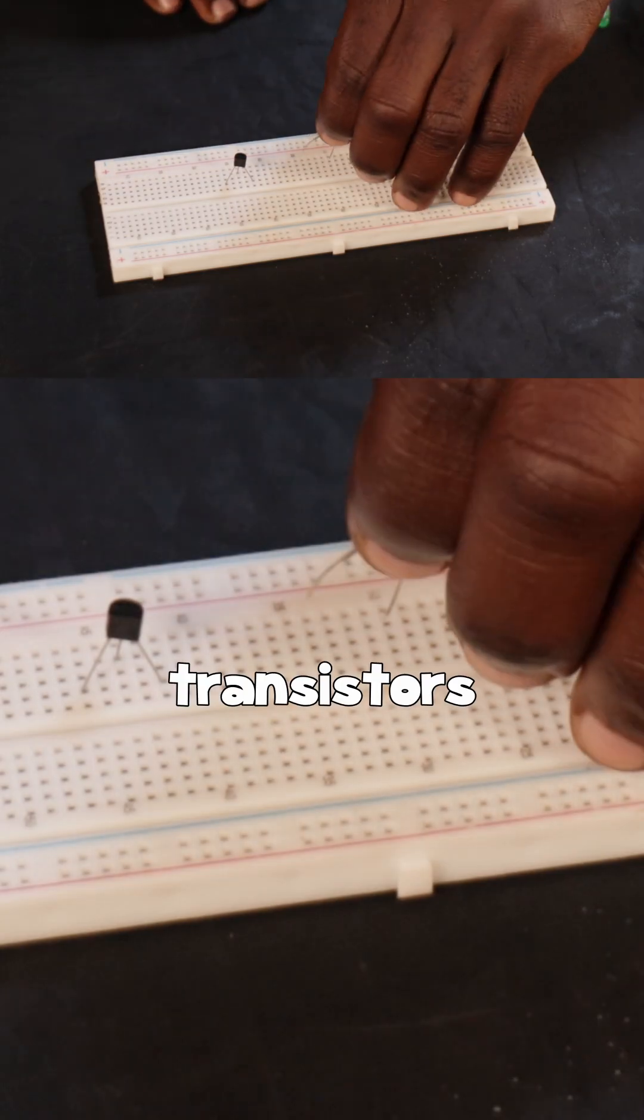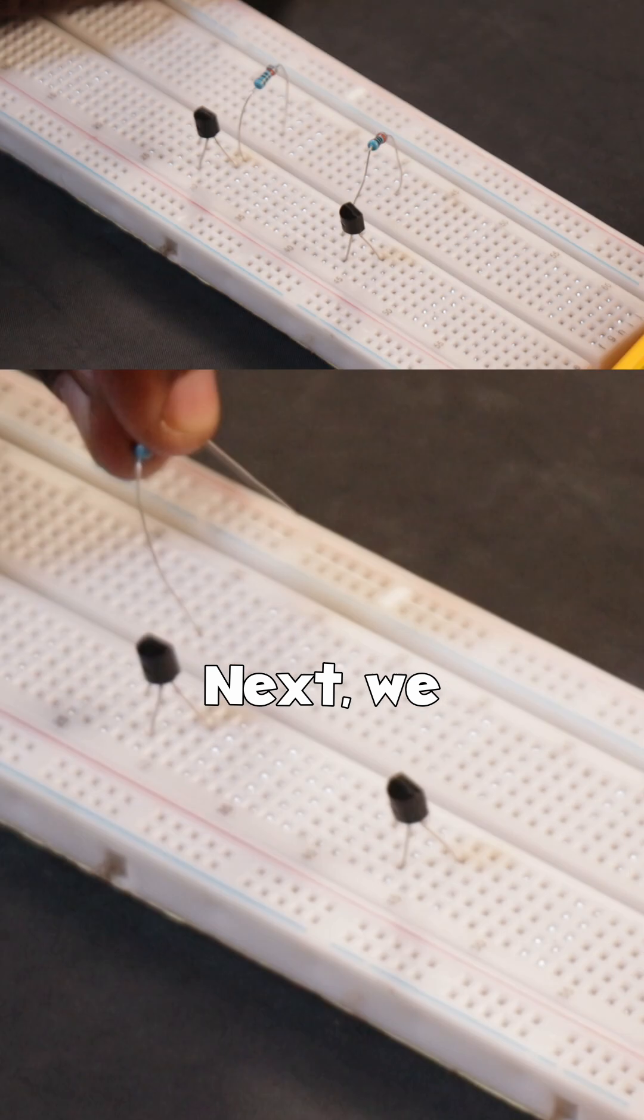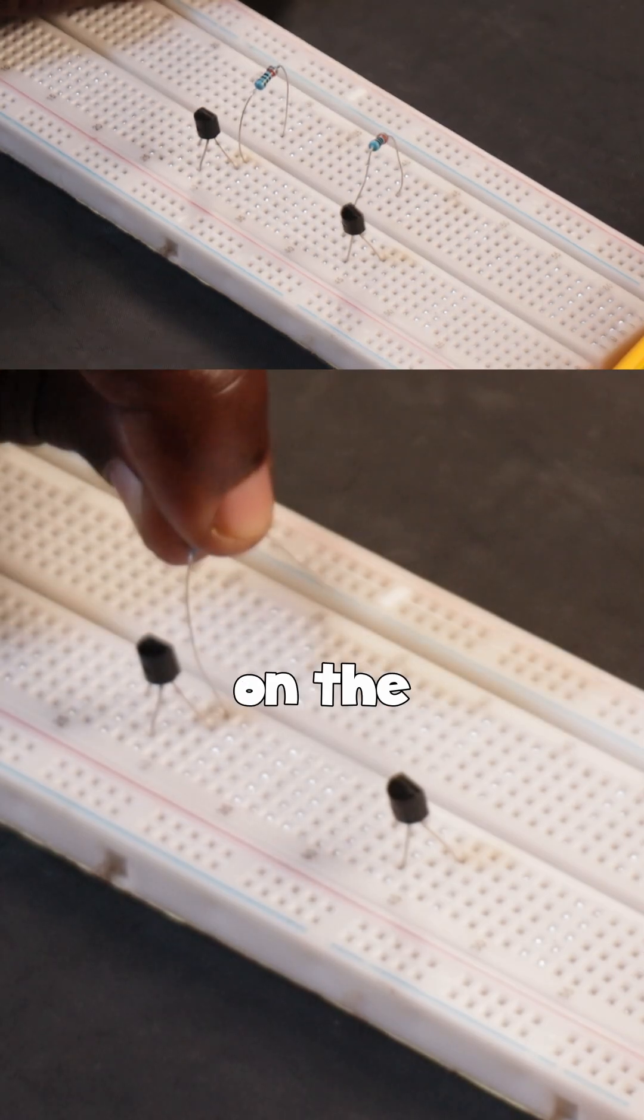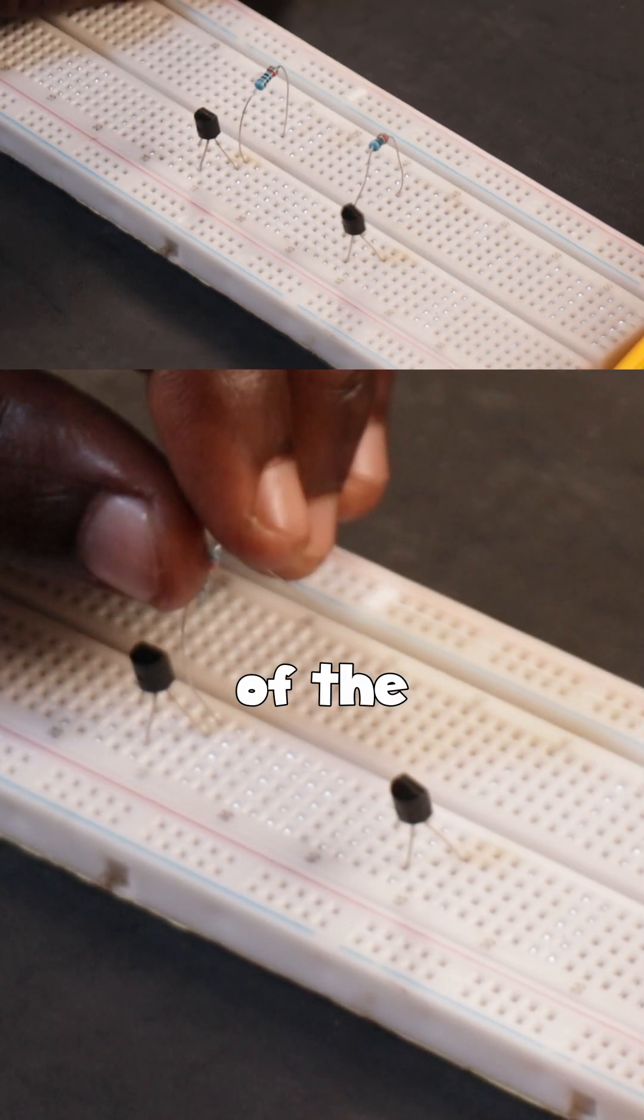So put two transistors on the breadboard. Next we connect a resistor on the collector terminal of the transistor.